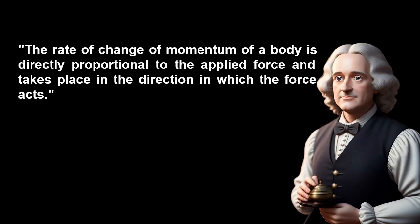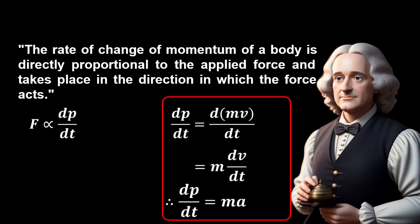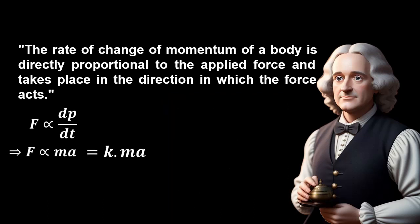We can express this law mathematically as F proportional to dp/dt, where F is the force and dp/dt is the rate of change of momentum with respect to time. dp/dt equals d(mv)/dt equals m·dv/dt because m remains constant with time. Therefore, dp/dt equals mA, where a equals dv/dt is the acceleration of the body. This implies that F proportional to mA, equals k·mA, where k is the proportional constant.